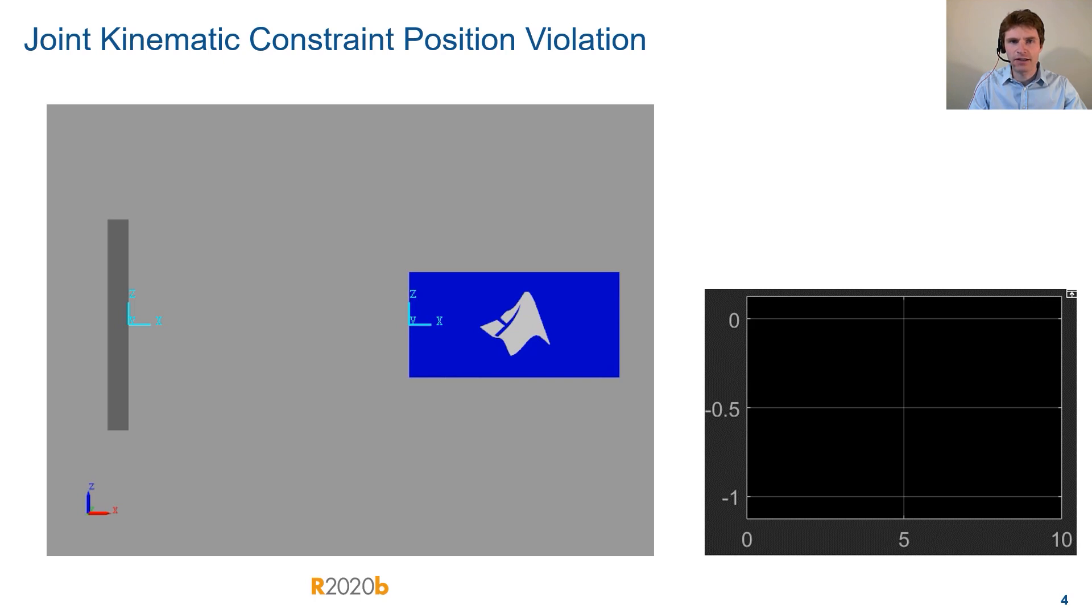The first phase is satisfying the position constraints of the joint. When the mode signal changes from disengaged to normal, Simscape Multibody automatically adjusts the positions of the bodies in the mechanism to satisfy the kinematic constraints of the joint. When the errors in the position constraints are non-zero, the position adjustment is non-physical.